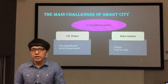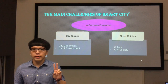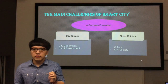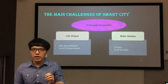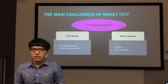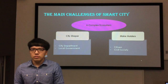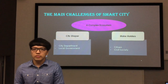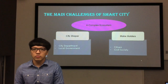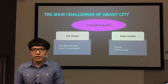Last but not least, a complex ecosystem has two main categories, which are city shapers and stakeholders. City shapers are divided into two categories: city department and local government. The Medini city department needs to ensure that the communication between local citizens and smart city policy is well communicated so that the smart city can be fully utilized. If not, there is little contribution to sustainable development.